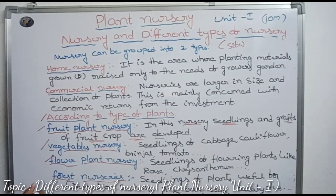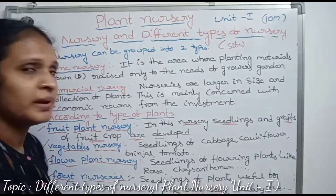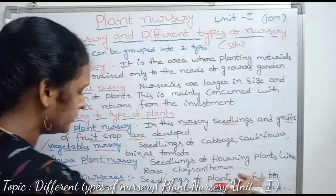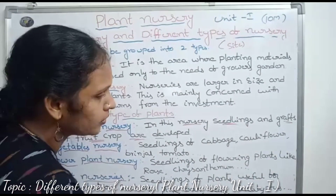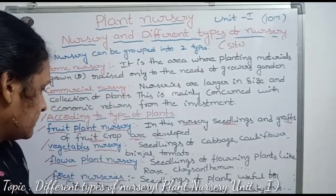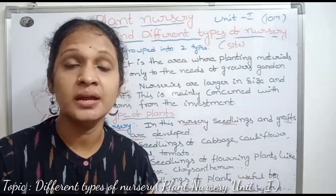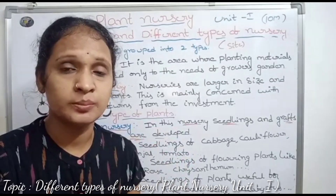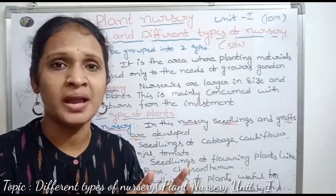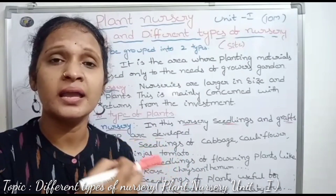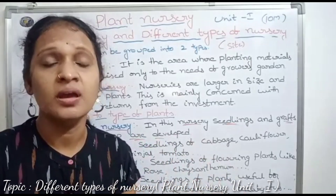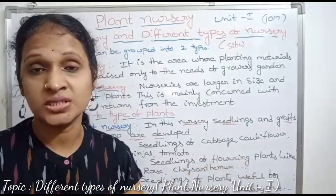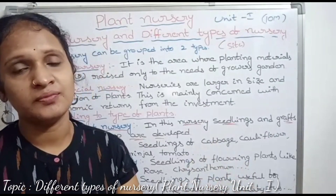Next one: forest nursery. Forest nursery means seedlings of plants useful for forestation, such as pine, oak, and eucalyptus trees, etc. In the forest nursery, all sorts of trees for forestation are developed — for example, oak, pine tree, eucalyptus, casuarina, etc.